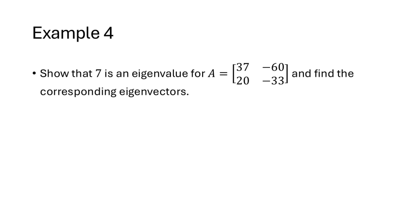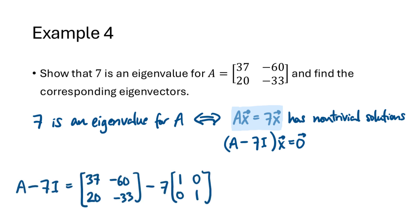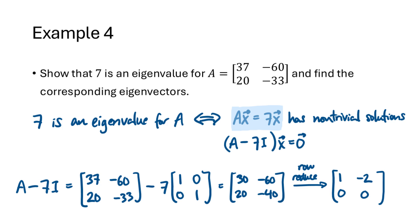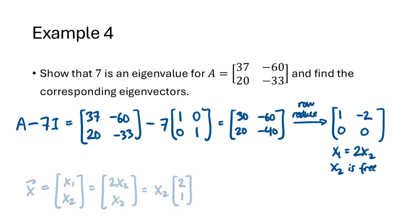Let's show that 7 is an eigenvalue for this 2 by 2 matrix and find the corresponding eigenvectors. 7 is an eigenvalue if and only if Ax equals 7x has non-trivial solutions, i.e., (A minus 7I) times x equals zero has non-trivial solutions. We compute A minus 7I and row reduce it, getting the matrix 1, negative 2, 0, 0. This gives x1 equals 2x2, x2 free. So the eigenvectors have the form x2 times the vector 2, 1 — any scalar multiple of 2, 1 is an eigenvector corresponding to eigenvalue 7.